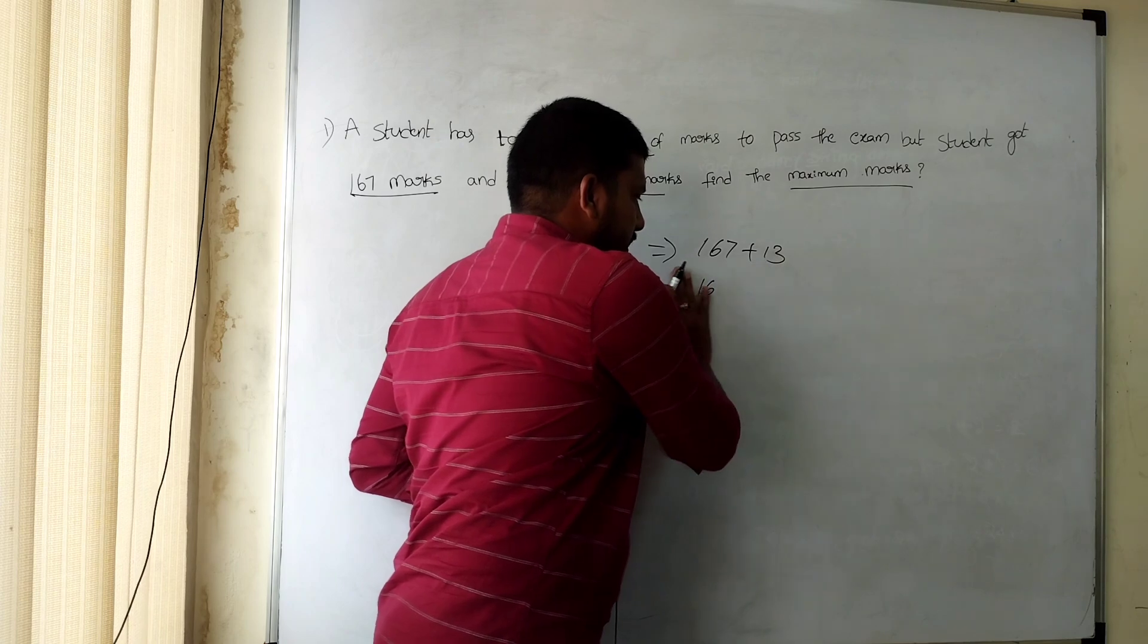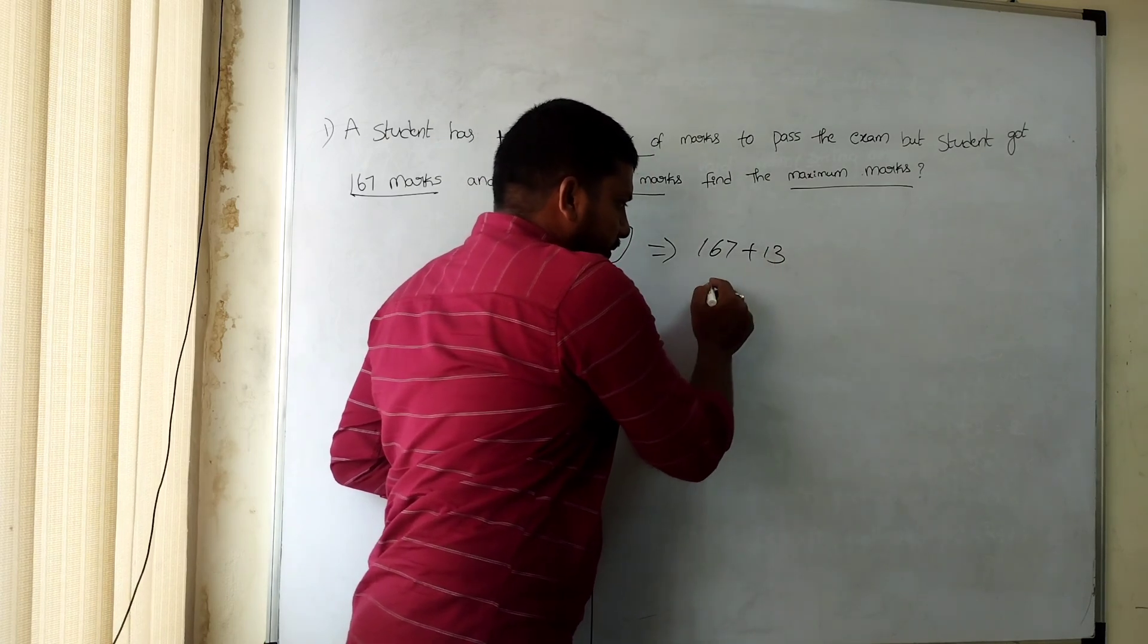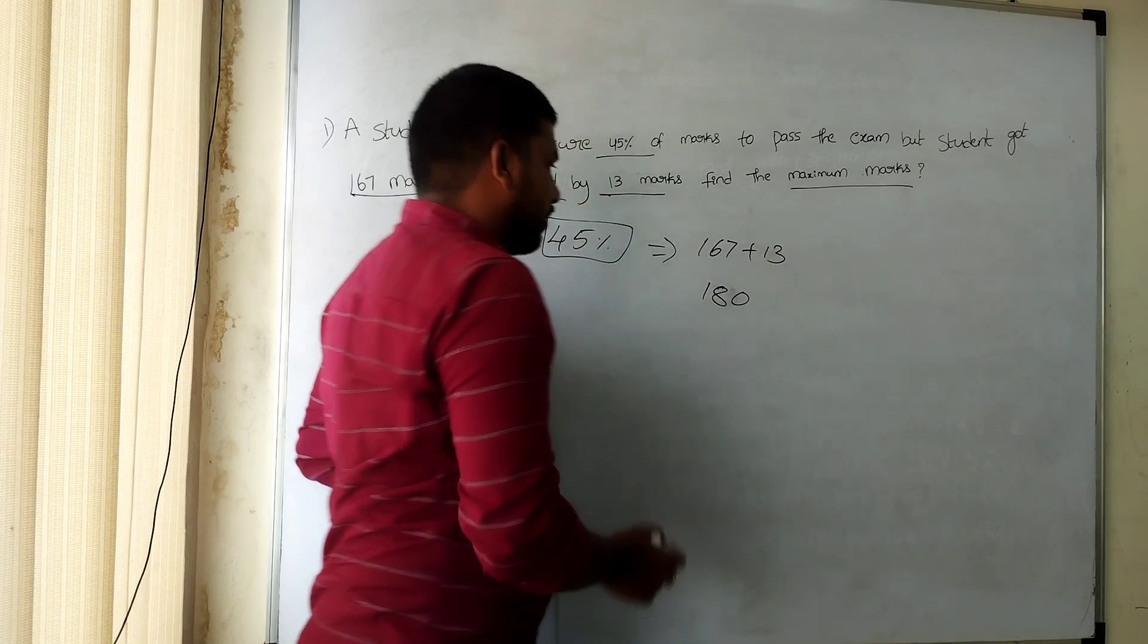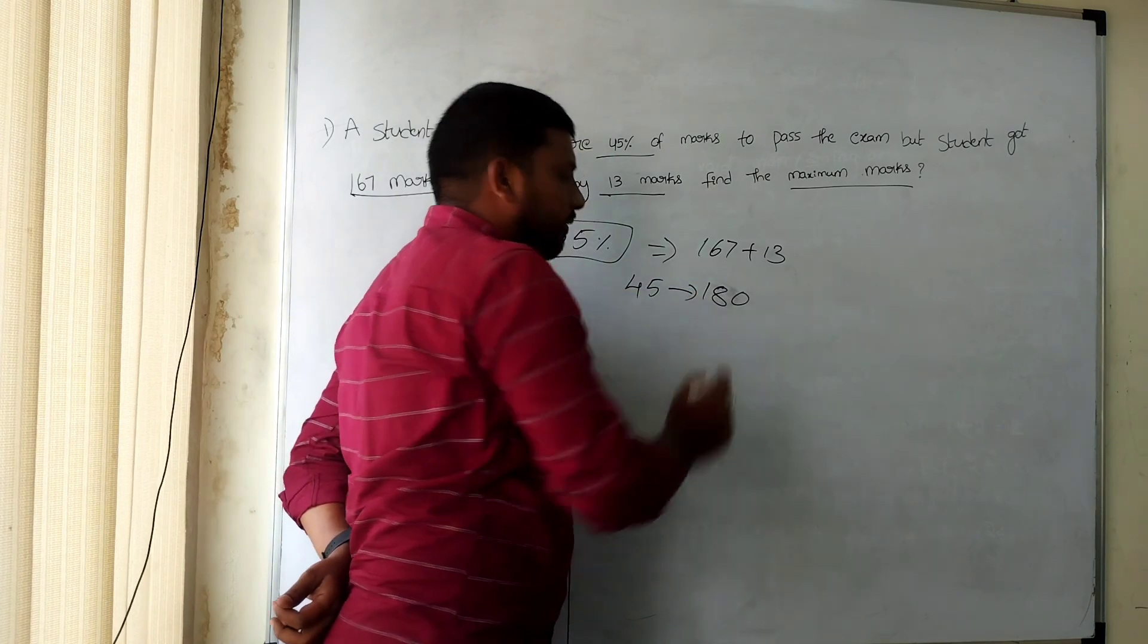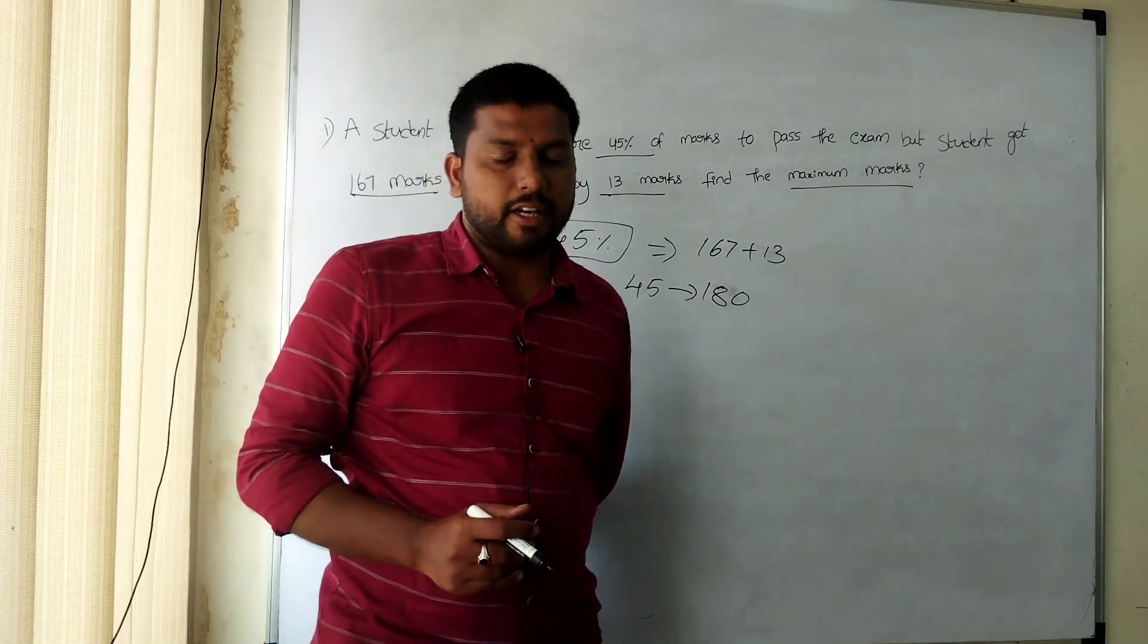So 167 plus 13 equals 180. Therefore, 45% equals 180 marks.